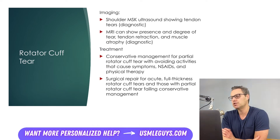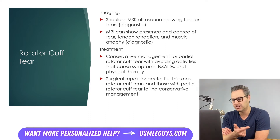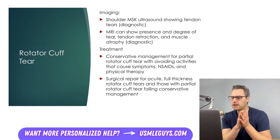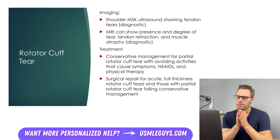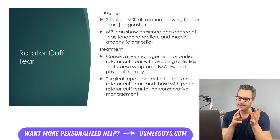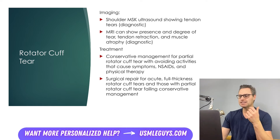Imaging is needed to diagnose a rotator cuff tear — either with MSK ultrasound showing tendon tears or, more likely, an MRI, which can show the degree of the tear, any tendon retraction, and muscular atrophy. If the tear is partial, we veer toward conservative management: activity avoidance, NSAIDs, and physical therapy. For those who can tolerate surgery, surgical repair is needed for an acute full-thickness rotator cuff tear. However, those with a partial tear who fail conservative management would also warrant surgery.